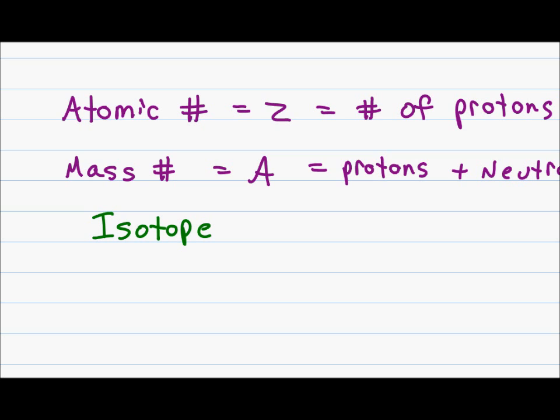An isotope is simply an atom, or many atoms, of the same element, each having a different mass. Let's look at an example. If I look at carbon with a mass of twelve, and compare that to carbon with a mass of fourteen, we see that the element is the same, but the mass number is different.